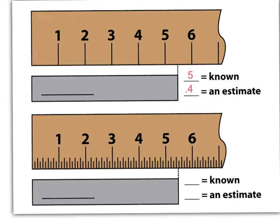So in the top ruler, the known number is 5. It's between 5 and 6. And I'm guessing that it is less than 5.5. So I'm going to guess that it's 5.4. So that is my estimate for the length of this grey box.